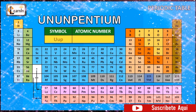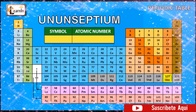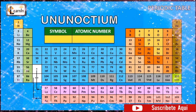The element ununpentium is represented as Uup and has an atomic number of 115. The element livermorium is represented as Lv and has an atomic number of 116. The element ununseptium is represented as Uus and has an atomic number of 117. The element ununoctium is represented as Uuo and has an atomic number of 118.